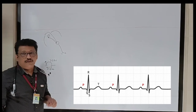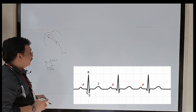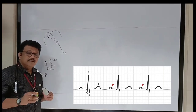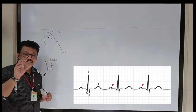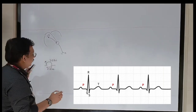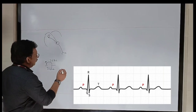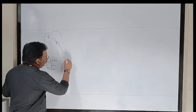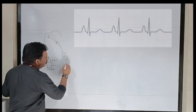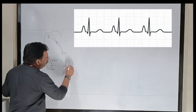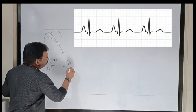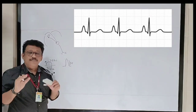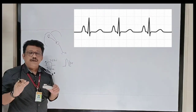Now we will see what abnormalities are seen in the size and width of the P wave. First, if the height of the P wave increases more than 2.5 divisions, it is a peaked P wave — we call it P pulmonale.